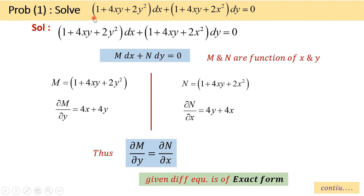First problem: (1 + 4xy + 2y²)dx + (1 + 4xy + 2x²)dy = 0. This given equation is in the form m dx + n dy = 0, where both m and n are functions of x and y. The value of m is 1 + 4xy + 2y² and the value of n is 1 + 4xy + 2x².